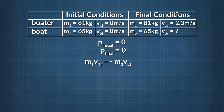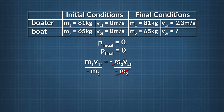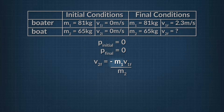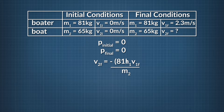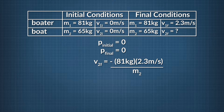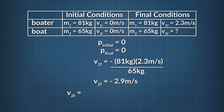Now all we need to do is rearrange the equation to solve for the final velocity of the boat. We divide both sides by M2, and see that V sub 2f is equal to negative M sub 1 times V sub 1f divided by M sub 2. We plug in 81 kg for M sub 1, 2.3 m/s for V sub 1f, and 65 kg for M sub 2, and find that the final velocity of the boat is negative 2.9 m/s, or 2.9 m/s away from the shore.